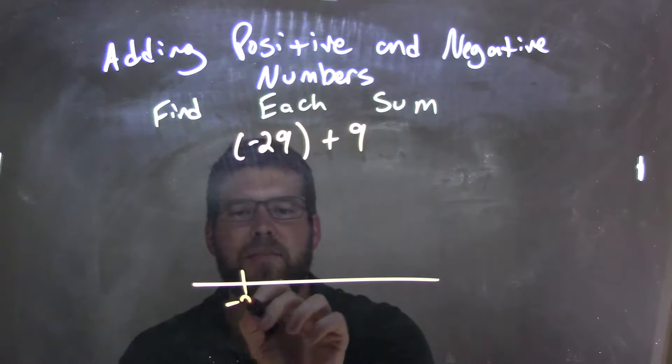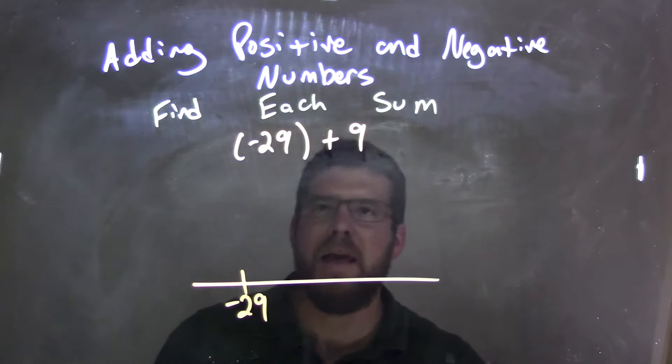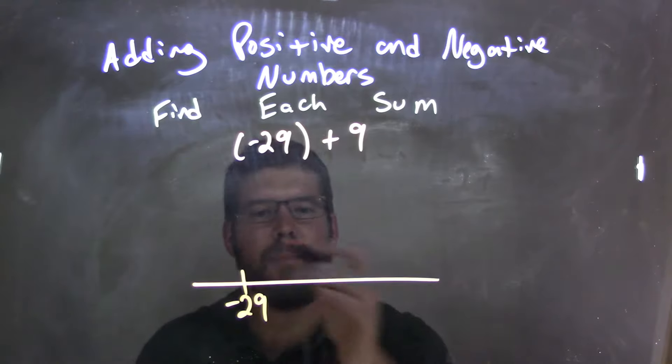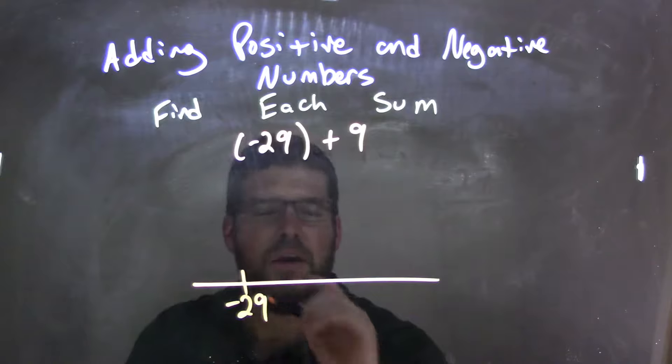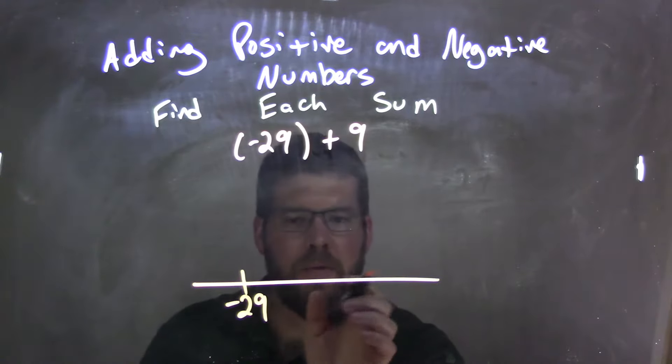So if I have negative 29 here, and I want to add 9 units into the positive direction, well, if I want to add 9 units to the positive direction, that's moving to the right, right?